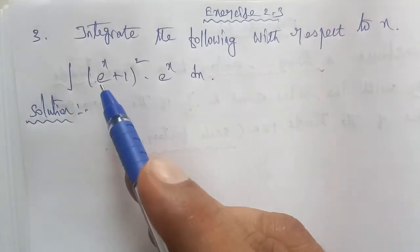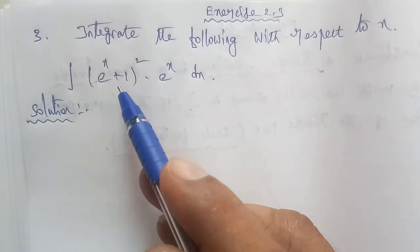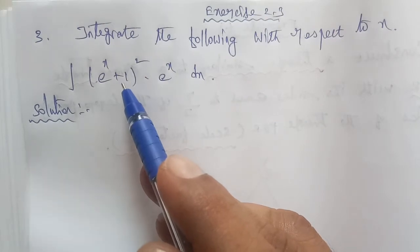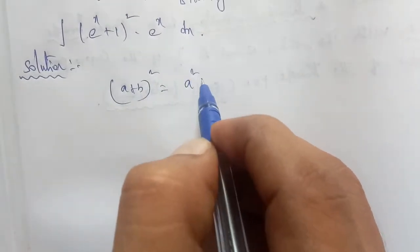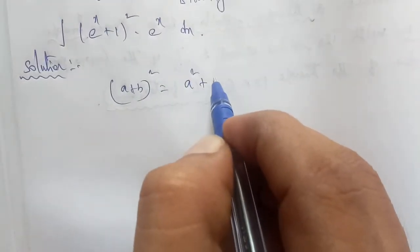So first of all, we'll use the formula for (a + b)^2. We know the formula: (a + b)^2 = a^2 + b^2 + 2ab.